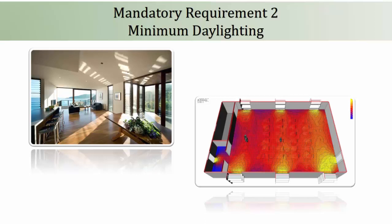The criteria for minimum glazing factor and its calculation is given in the IGBC Green Home Guideline version 2.0. For compliance by daylighting simulation using computer software, minimum 50% of the regularly occupied spaces for every dwelling unit should achieve minimum 108 lux in clear sky conditions on 21st September at 12 noon.